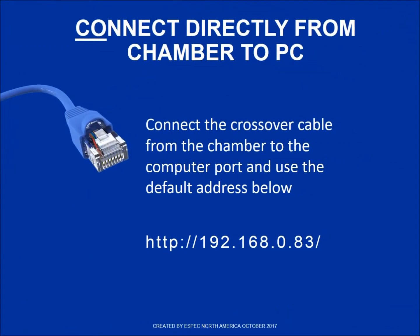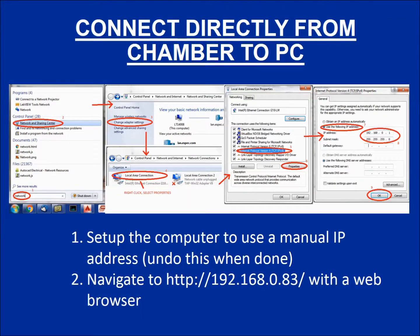The web controller ships configured to connect via DHCP. If this cannot be done, the web controller will fall back to using the static IP 192.168.0.83. For this third method, you will need to set up the computer to use a manual static IP address as shown on the screen.